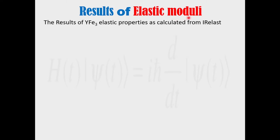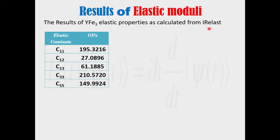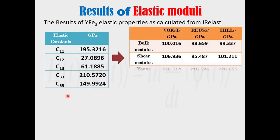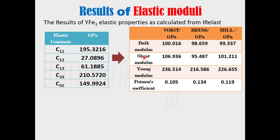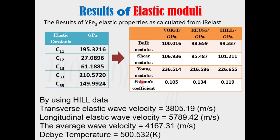The results of elastic properties. The elastic properties of yttrium iron-3 are calculated from IRelast. We calculate the elastic constants, from which we can calculate the bulk modulus, shear modulus, Young's modulus, and Poisson's coefficient. These are in turn used to calculate the average wave velocity and the Debye temperature for this system.